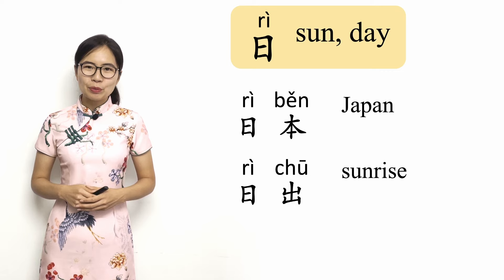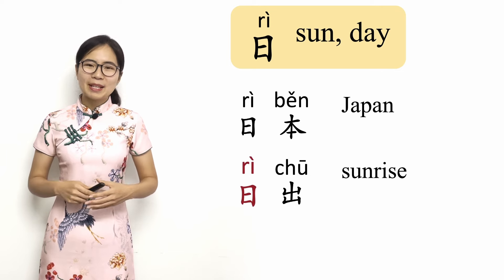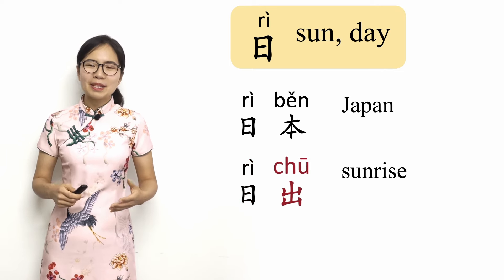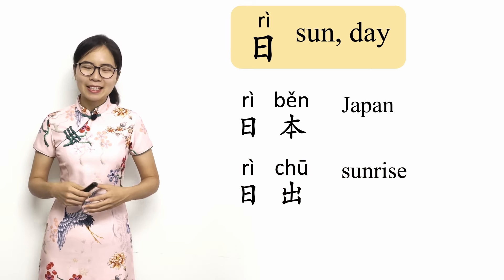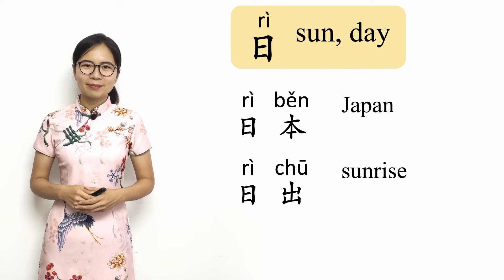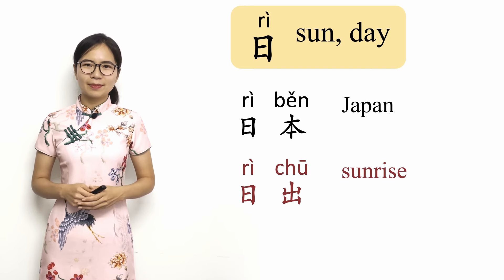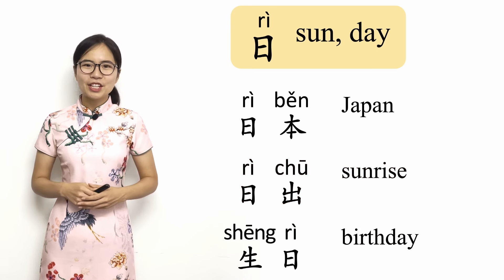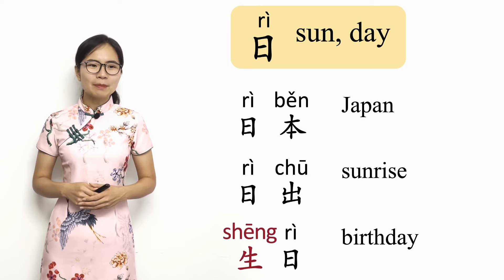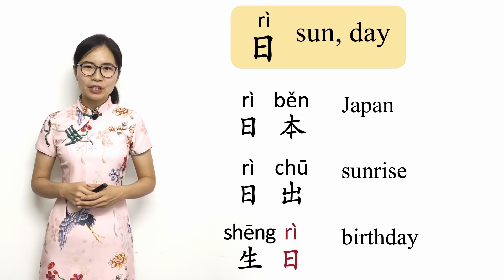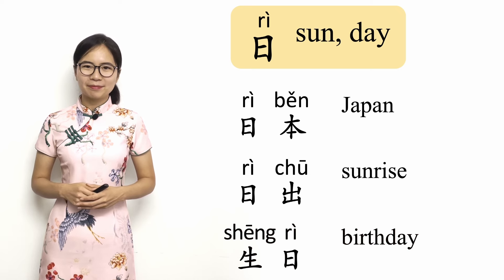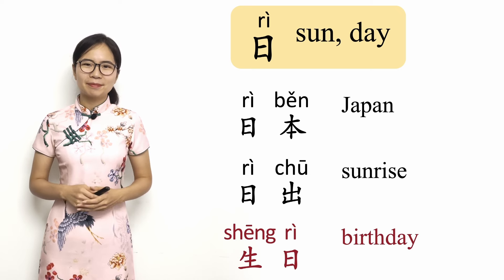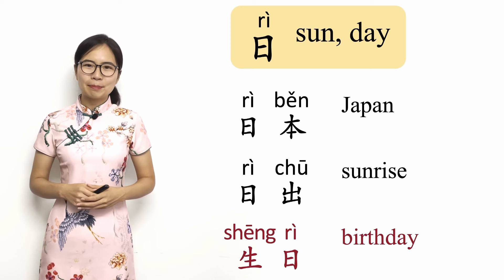Next is 日出. 日 means sun, and 出 means to come out. Together, 日出 means the sun comes out — in other words, the sunrise. 日出, sunrise. And finally, we have 生日. 生 means birth, and 日 here means day. So together, 生日 means birthday. 生日, birthday.